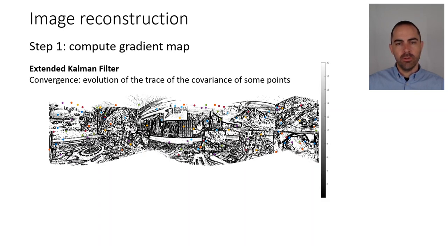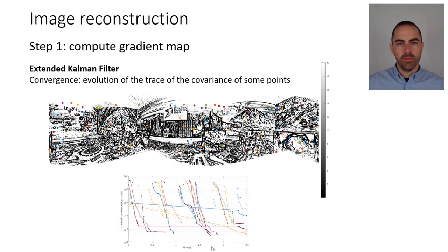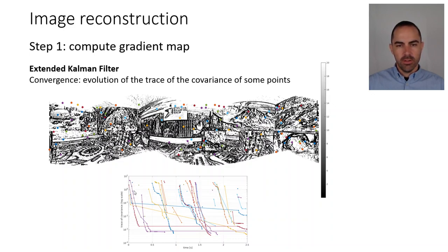If we do this for the whole map, and select some arbitrary random points and plot how the trace of the covariance evolves as time progresses — in log scale — we can see that for some points visited multiple times, because many events happen at that edge, the uncertainty is decreasing, meaning the estimate is getting better and better.